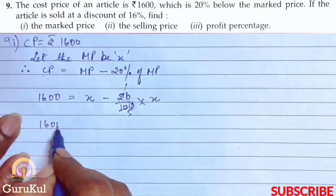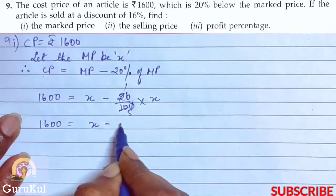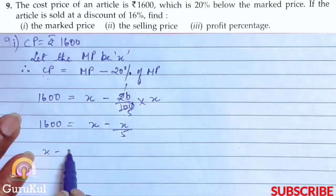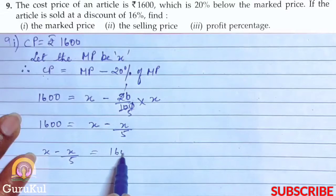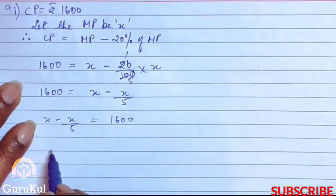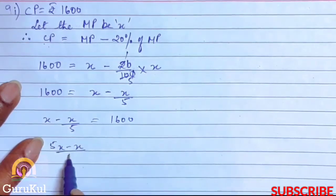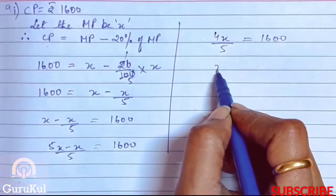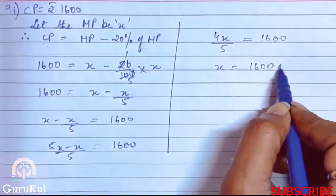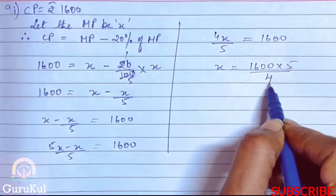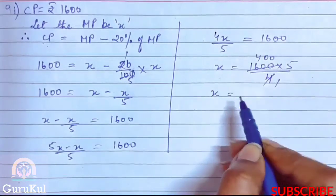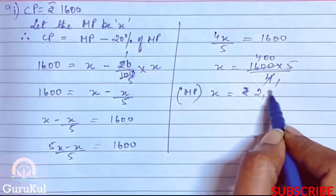So 1600 equals x minus x/5. We can also write this as x minus x/5 equals 1600. Taking LCM, that becomes (5x minus x)/5 equals 1600, so 4x/5 equals 1600. Therefore x equals 1600 into 5/4, which gives x equals rupees 2000.